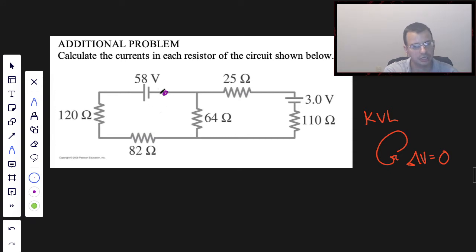So I'm going to start here and I'm going to do one loop this way. This 58 volt is way bigger than 3 volts, so I'm going to assume that it just totally dominates and the current goes like this. This will be I middle, this will be I left, and this will be I right.